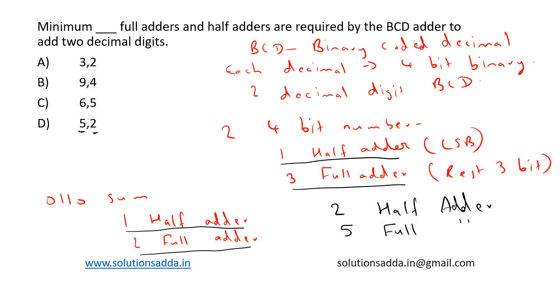So in total we require five full adders and two half adders. Therefore, option D is the correct answer.